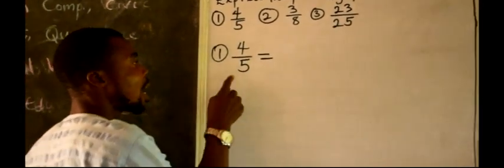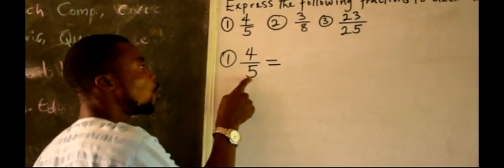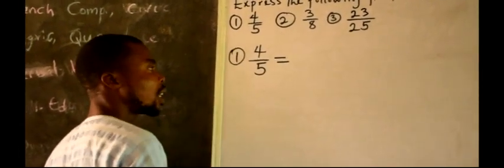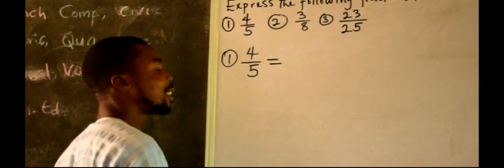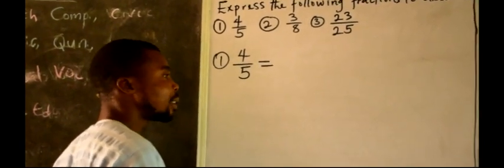Notice how many times can 5 go in 4? Impossible. It cannot go. How many times? Zero.